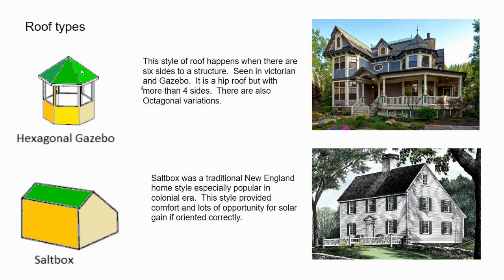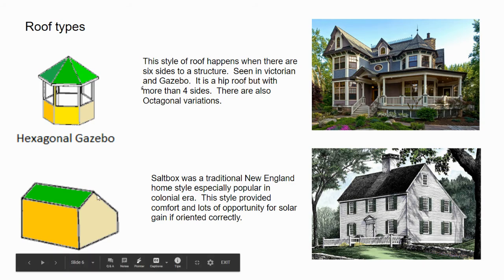A hexagonal gazebo is basically a hip roof with multiple sides — you could have an octagonal variation or as many sides as you want. This kind of roof structure is common in Victorians. A turret with four visible sides would be an octagonal example attached to the house. This asymmetrical style goes along very nicely with Victorian architecture.